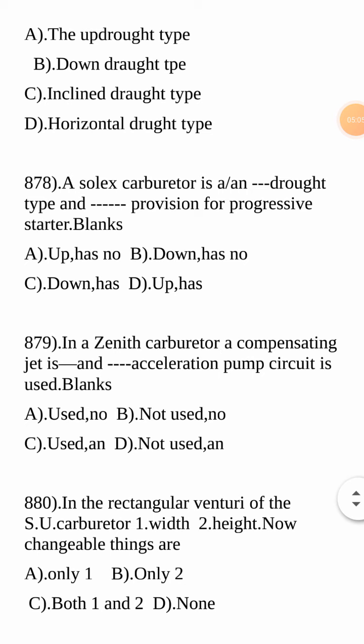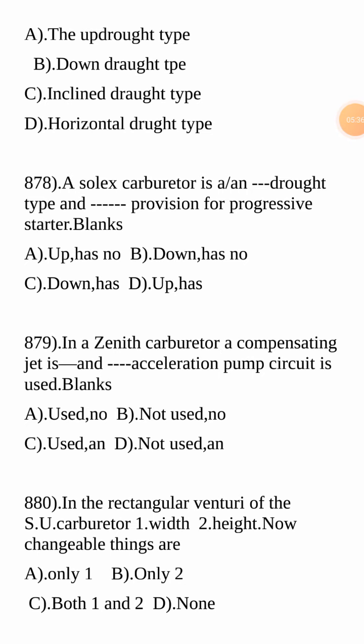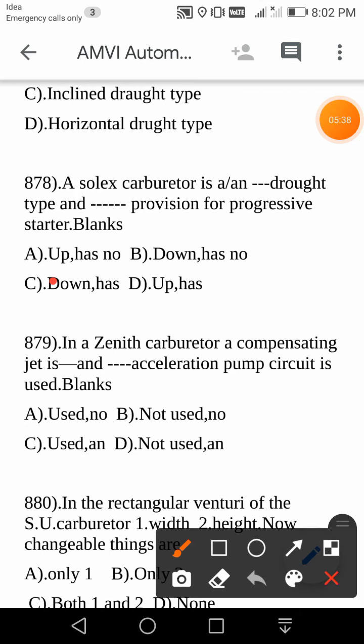Next question: A Solex carburetor is a dash draft type and has dash provision for a progressive starter. Options: updraft with no provision, updraft with provision, downdraft with no provision, or downdraft with provision. A Solex carburetor is a downdraft type and has provision for a progressive starter. Your answer is C.